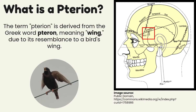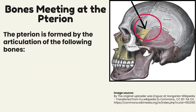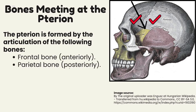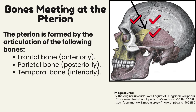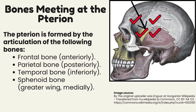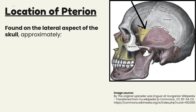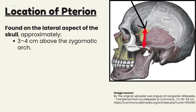Which bones are meeting at the pterion? The pterion is formed by the articulation of the following four bones: the frontal bone anteriorly, the parietal bone posteriorly, the temporal bone inferiorly, and the sphenoid bone — greater wing — medially. What is the location of the pterion?